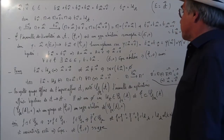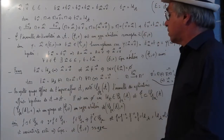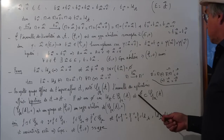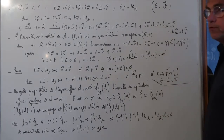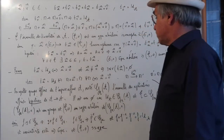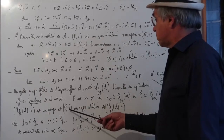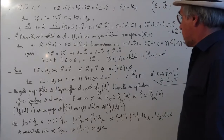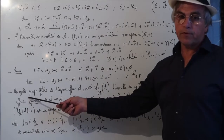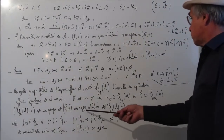On appelle groupe affine de l'espace affine A, noté GA(A), l'ensemble des applications affines bijectives de A vers A. Il est non vide car l'identité appartient à ce groupe, et les translations font partie de ce groupe puisqu'elles sont bijectives. GA muni de la composition est un groupe, et l'ensemble des translations muni de la composition est un sous-groupe abélien.